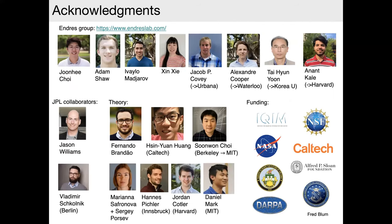Before jumping in, let me acknowledge the group at Caltech — students and postdocs who do all the work, some of whom have left and have their own groups now — as well as theory collaborators. I'll show results achieved together with Soonwon Choi, who is at Berkeley and about to move to MIT, and some clock results carried out in collaboration with the Jet Propulsion Laboratory in Pasadena. Are there any questions on that broad overview? Feel free to put questions in the chat and we can aggregate them.